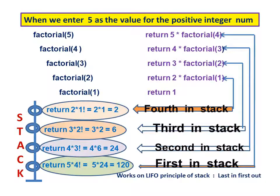Example: when we enter 5 as the value for the positive integer num, factorial(5) will return 5 multiplied by factorial(4). Before the multiplication is performed, there is a call for factorial(4), so the job is placed first in the stack. Factorial(4) will return 4 multiplied by factorial(3); before the multiplication is performed, there is a call for factorial(3), so the job is placed second in the stack.